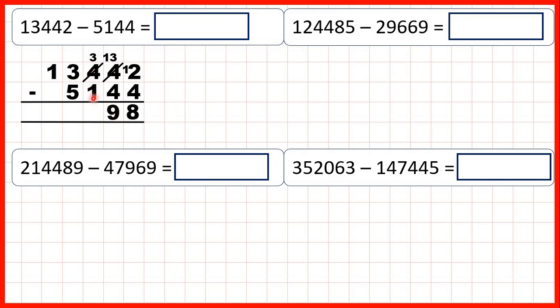Now 3 minus 1 is 2. We can't do 3 minus 5 using the column method, so go to the left, one less, one in front, and 13 minus 5 is 8. Then we have 0 minus nothing, so we don't need to write anything in our ten-thousands column. Our answer is 8,298.